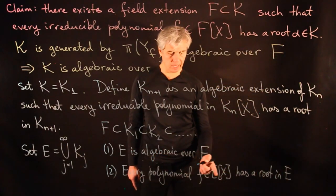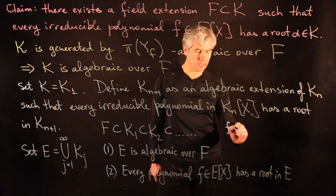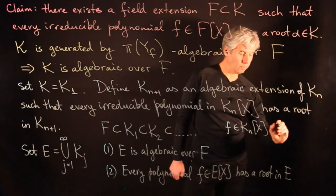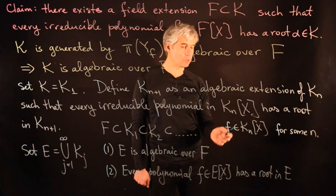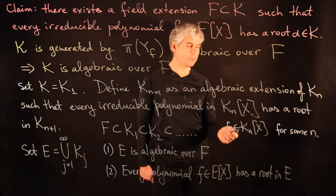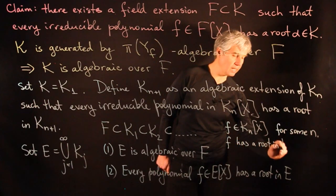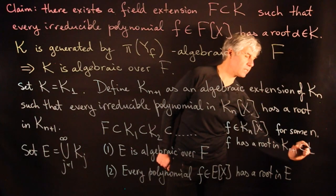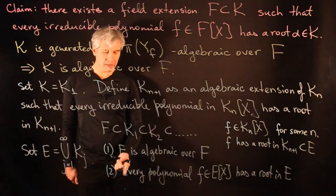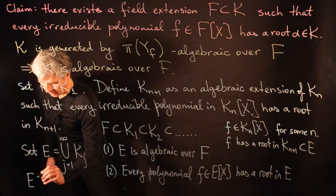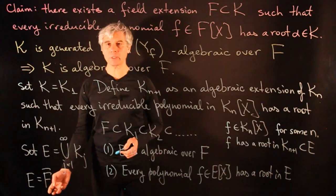Secondly, every polynomial f in E[x] has a root in E. Since E is the union of these fields, every polynomial in E[x] is in fact a polynomial in K_n[x] for some n. We can consider an irreducible factor of this polynomial, and that irreducible factor has a root in K_{n+1}, which sits inside E. This proves that every polynomial in E[x] has a root in E. These two conditions together show that E is the algebraic closure of F, and we have proved that every field has an algebraic closure.